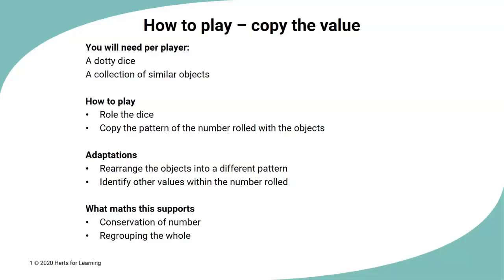You're also looking at the fact that if you rearrange it, it doesn't change the value and you can also explore what numbers can you see within other numbers. How to play copy the value. Here's a reminder of what you'll need: a dotty dice and a collection of similar objects. The rules of the game, the adaptations that you can make. The maths this game supports: it supports the children's development of conservation of number, the idea that it doesn't matter how the amount looks it always has the same value. It also supports the idea of regrouping the number, that numbers have other numbers hidden inside them.